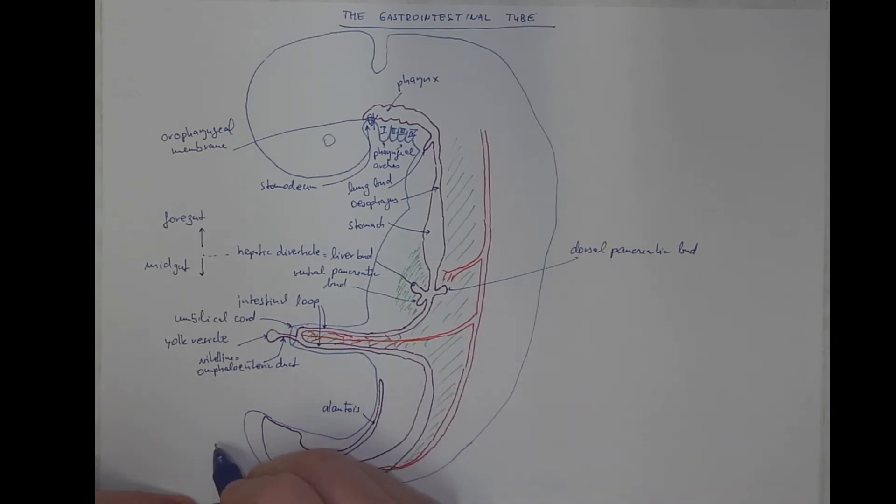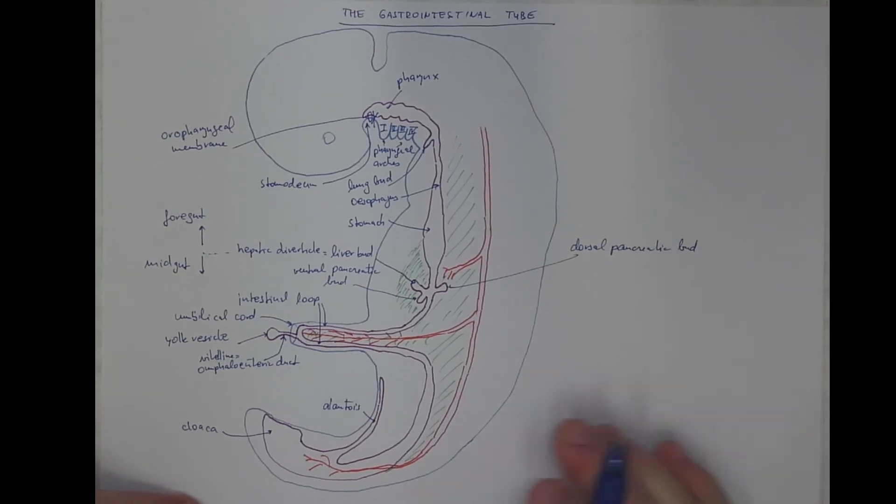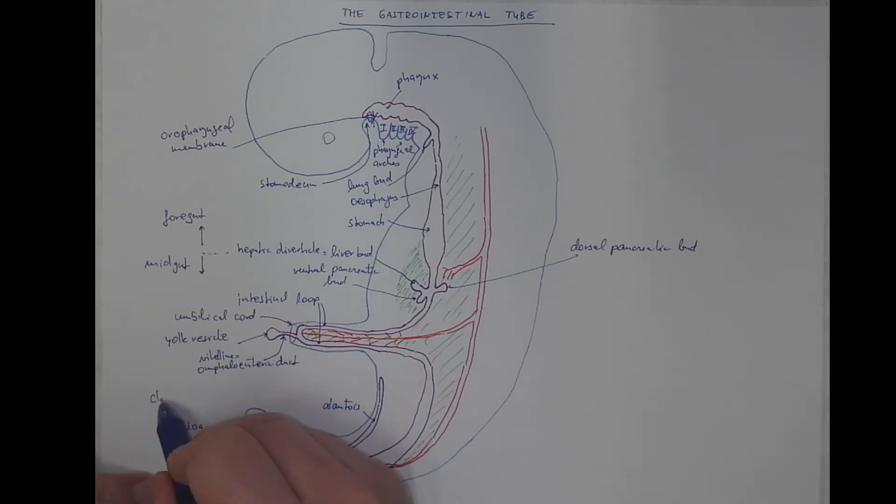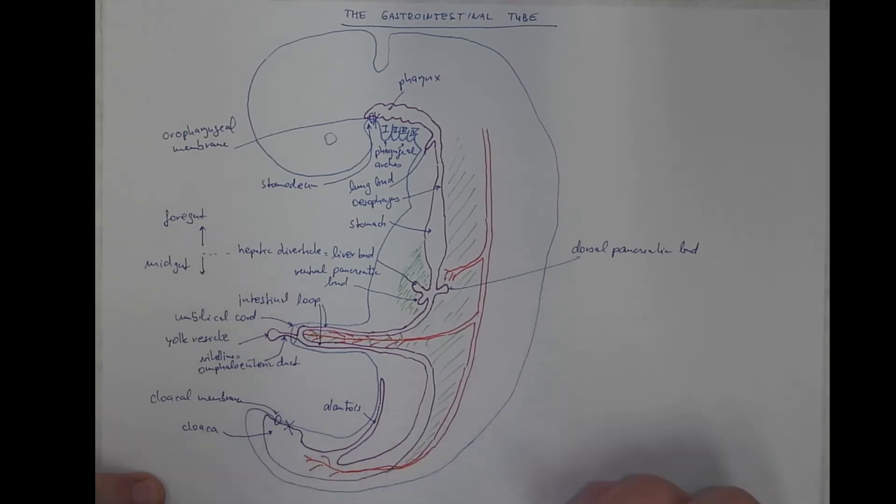And we got the cloaca, the common part of the terminal segment of the GIT, and together with the urinary and genital systems, where also the ectoderm and endoderm is temporarily next to each other, forming the cloacal membrane. But it also breaks up later on. And this is the region of the hindgut.